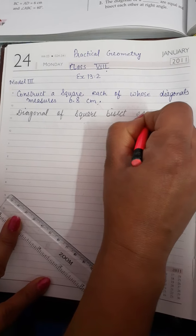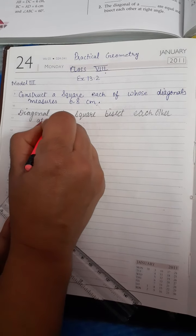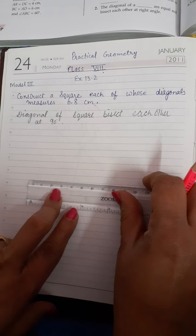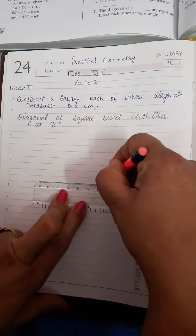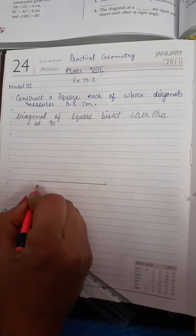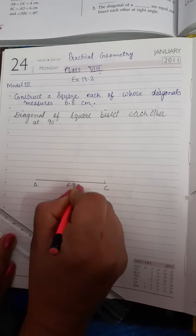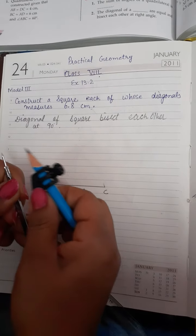Here we have first of all one diagonal to draw. We will draw 6.8 centimeter. Name it AC, 6.8 centimeter. Here we have diagonal drawn.